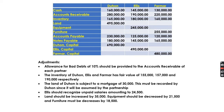Let us first recall the data involved in the problem. We have Duhon, Ellis, and Farmer — sole proprietors who will establish a partnership. You are given the balances of their accounting reports and the adjustments below: 10% allowance for receivables, inventory adjustment, a mortgage recognized for Duhon, unpaid salaries recognized for Ellis, and fair value adjustments for land, equipment, and furniture.